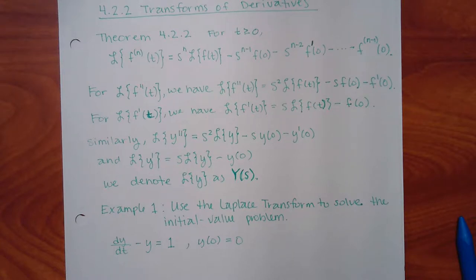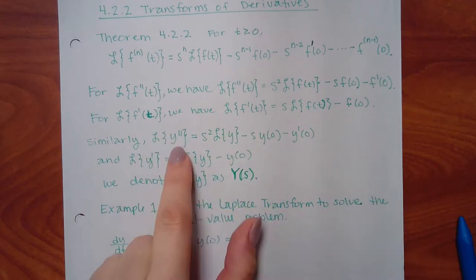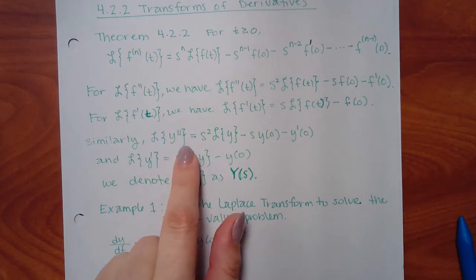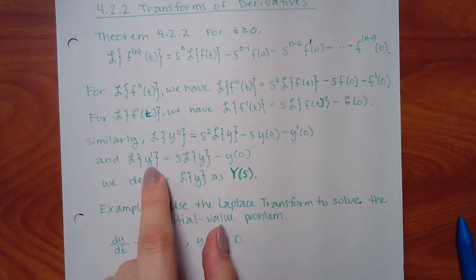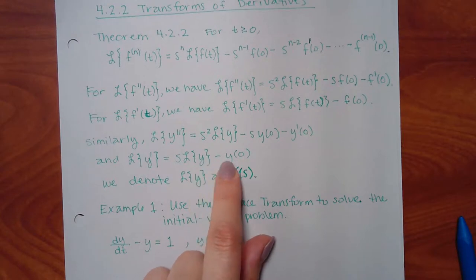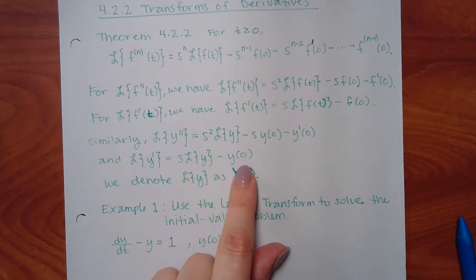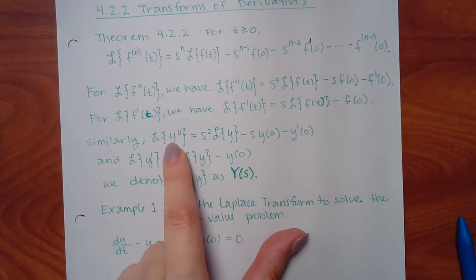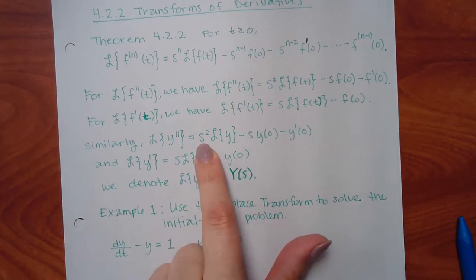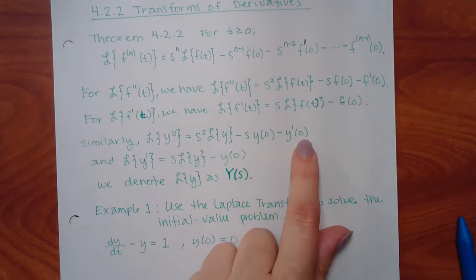Even though it says Y, Y is a function of T. Just like these definitions, it's the same thing if you have Y prime and Y double prime. For the Laplace of Y prime, you get s times the Laplace of Y minus Y of 0. For the Laplace of Y double prime, you get s squared times the Laplace of Y, minus s times Y of 0, minus Y prime of 0.